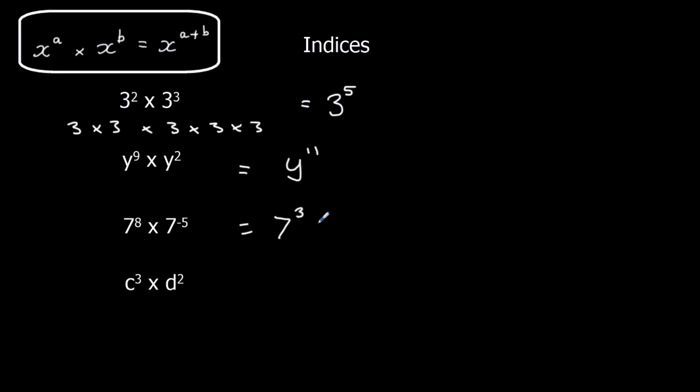Now look at this last one. I've got c cubed multiplied by d squared. They don't have the same base. I cannot follow the rule because the base has to be the same. So I cannot multiply them together — I can remove the multiplication sign, but I cannot do anything with the powers because they have to be of the same base.